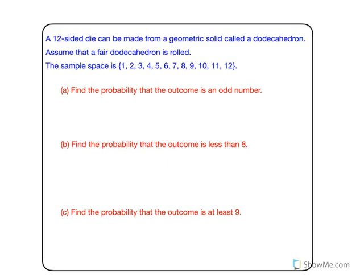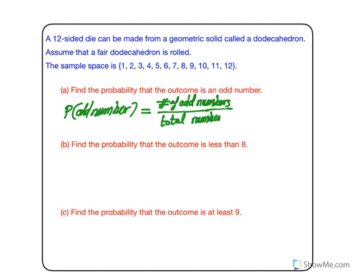I'm going to solve all of them on one page. Find the probability that the outcome is an odd number. The probability of an odd number equals the number of odd numbers over the total number of outcomes.